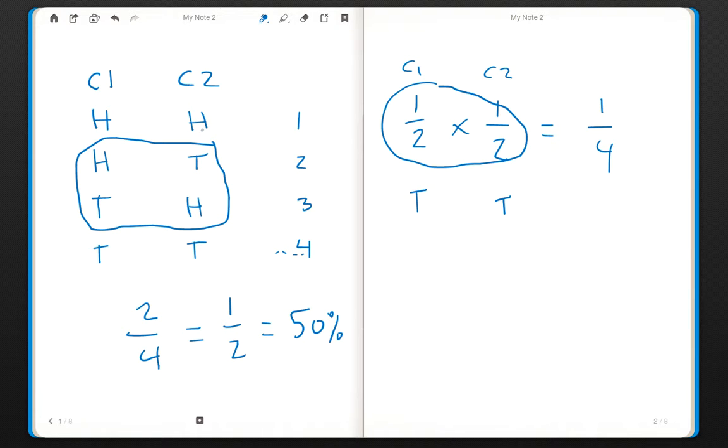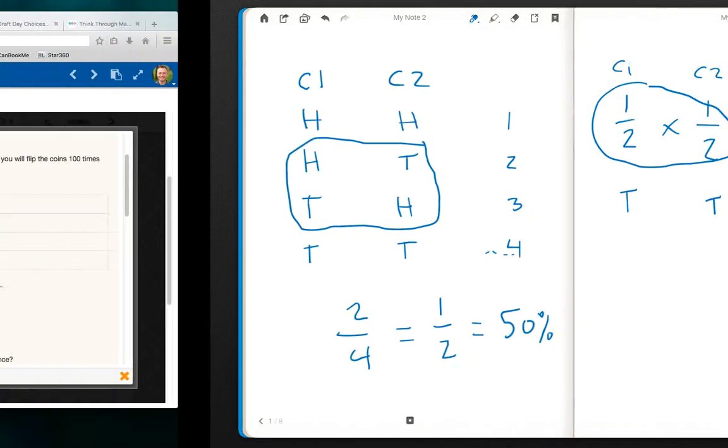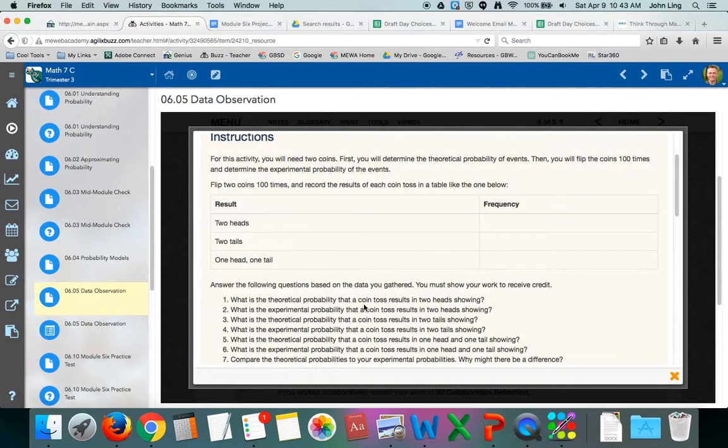If you make this little table, and you can do this on your assignment, there's four different outcomes, there's only one outcome of those four where you can get two heads. So it'd be a one out of four chance.